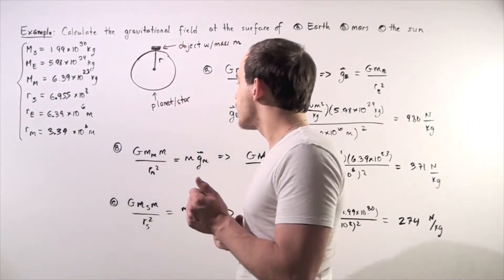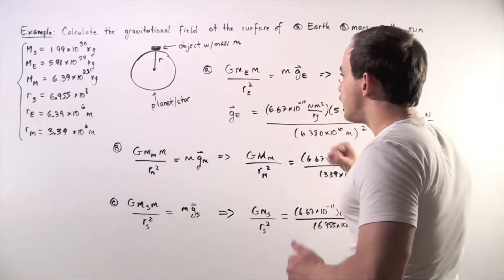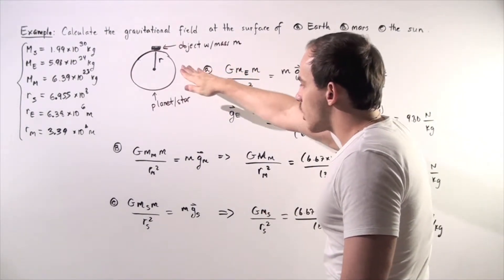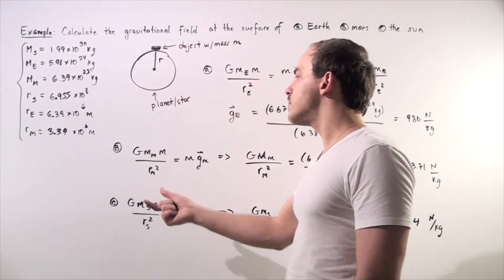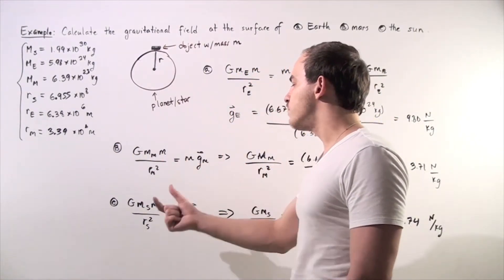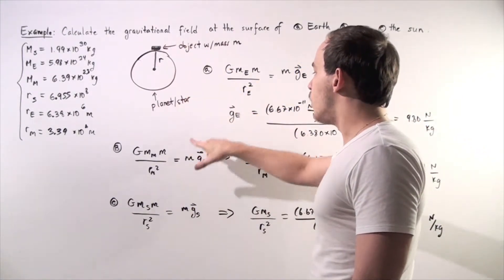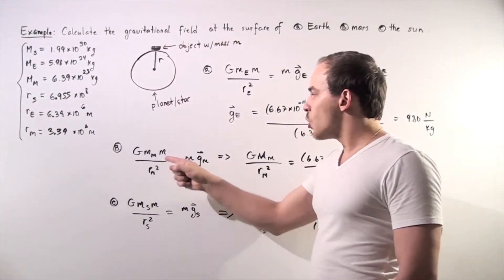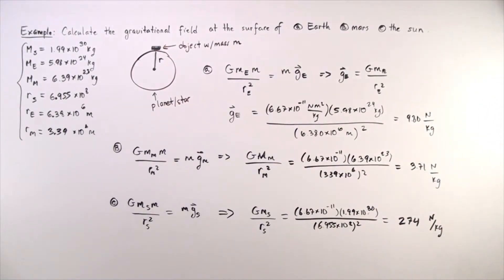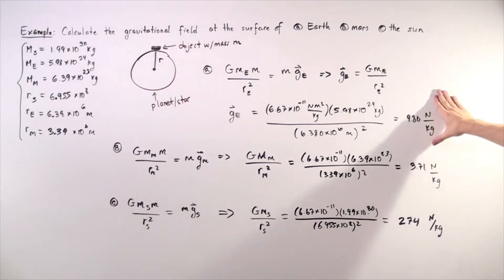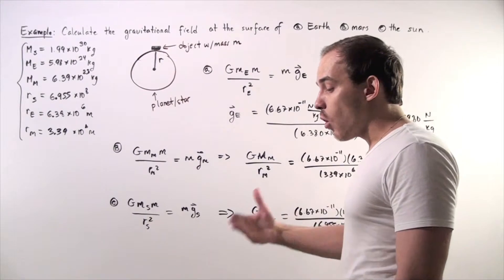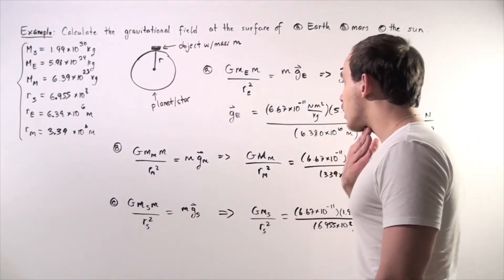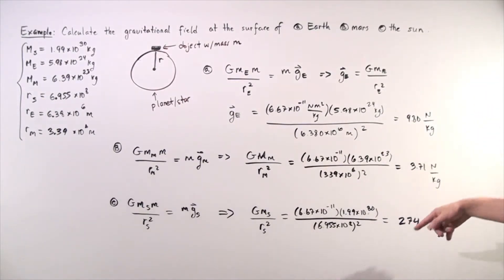For part B — Mars — we follow the same steps, but now use the mass and radius of Mars instead. The gravitational constant multiplied by the mass of Mars divided by the radius of Mars squared equals our gravitational field of Mars. The m's cancel again, and we plug in our values to get 3.71 newtons per kilogram. This is less than Earth's gravitational field, meaning it would be easier to walk and jump on Mars than on Earth.